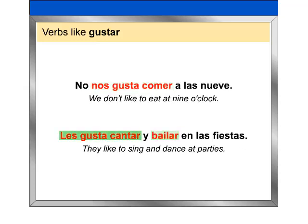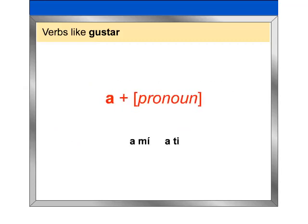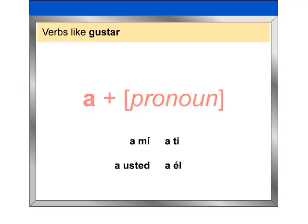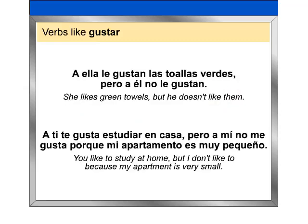Les gusta cantar y bailar en las fiestas. The construction a plus pronoun — for example, a mí, a ti, a usted, or a él — is used to clarify or to emphasize who is pleased. Look at these examples: A ella le gustan las toallas verdes, pero a él no le gustan. A ti te gusta estudiar en casa, pero a mí no me gusta porque mi apartamento es muy pequeño.